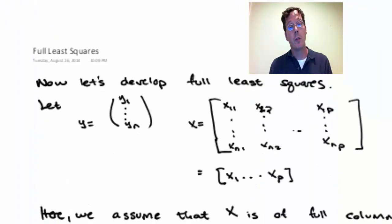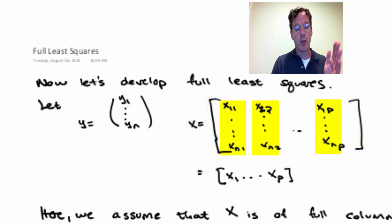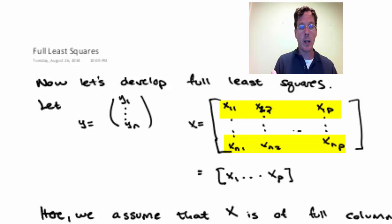So let's do full least squares. Our response is still y, which is y1 to yn, and now we have a collection of vectors. The first vector for x might be BMI, the second one might be blood pressure, and the third one might be whatever else. But it's organized in such a way that each column is a variable, and each row corresponds to the corresponding element of y.